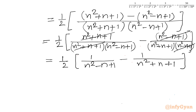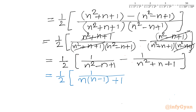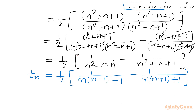Taking n common from the first two terms of each denominator, we can also write: Tn = (1/2) × [1/(n(n-1)+1) - 1/(n(n+1)+1)]. This is our general term Tn. Let us now write out the first, second, third, and last term of the sequence to see the telescoping pattern.